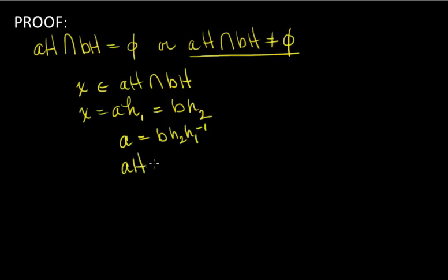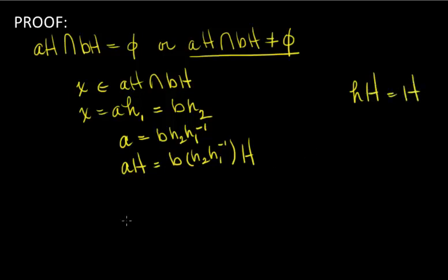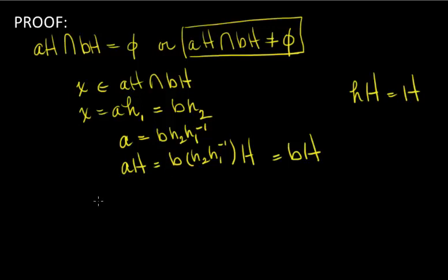That means A equals BH2·H1 inverse, so AH equals BH2·H1 inverse·H. Since H·H equals H for any element within H itself, this simplifies to BH. So if the intersection is non-empty — meaning there is some X in G belonging to two cosets — then those cosets are exactly the same.